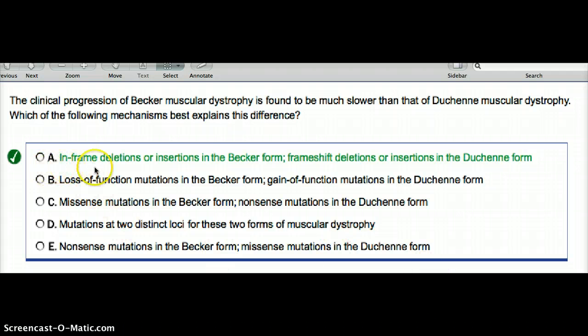So that's exactly what it says here. In-frame deletion or insertion in Becker form, and frameshift deletion or insertion in the Duchenne form. So which of the following mechanisms best explains this difference? In-frame deletion or insertion in Becker form, frameshift deletion or insertion in Duchenne form.